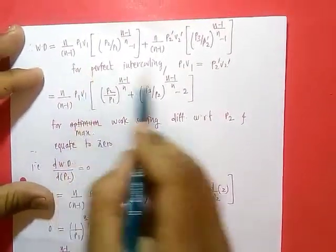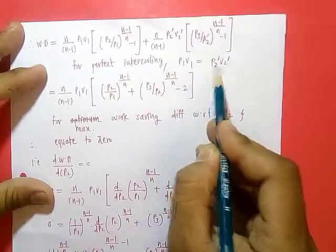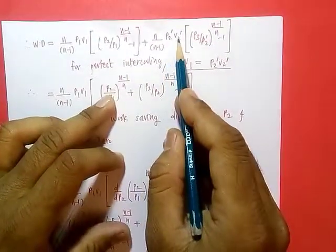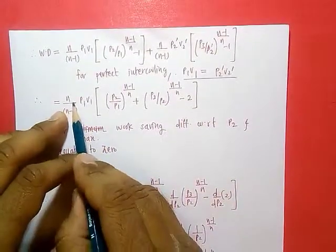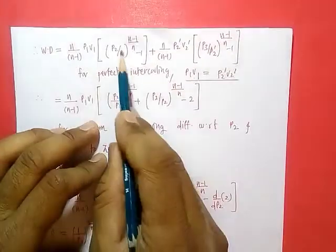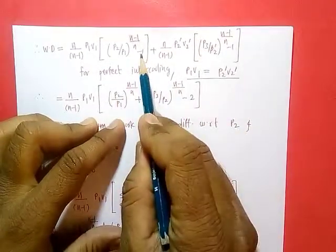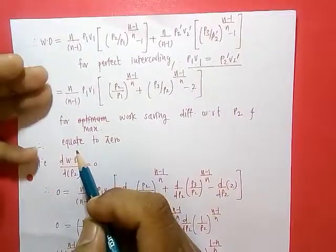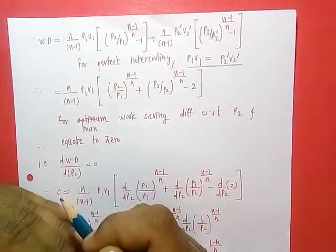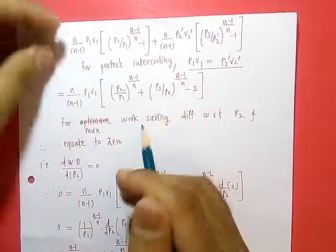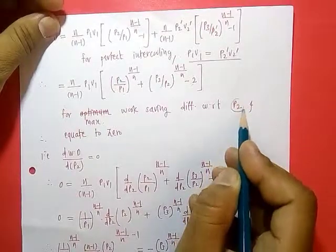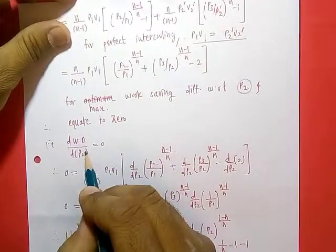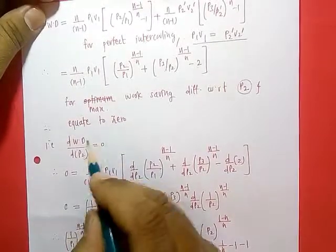With perfect intercooling, p1·v1 = p2·v2-dash. As the process is isothermal, we can take both these values common, and the equation becomes [n/(n-1)] · p1·v1 · [(p2/p1)^((n-1)/n) + (p3/p2)^((n-1)/n) − 2]. As we know, if we increase intermediate pressure the work saving is reduced; if we lower the pressure ratio, work saving is also reduced. Work saving is a function of intermediate pressure p2.